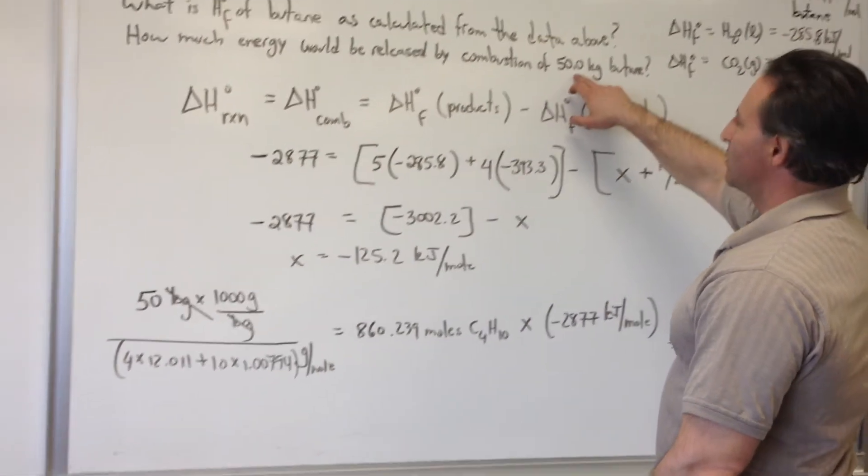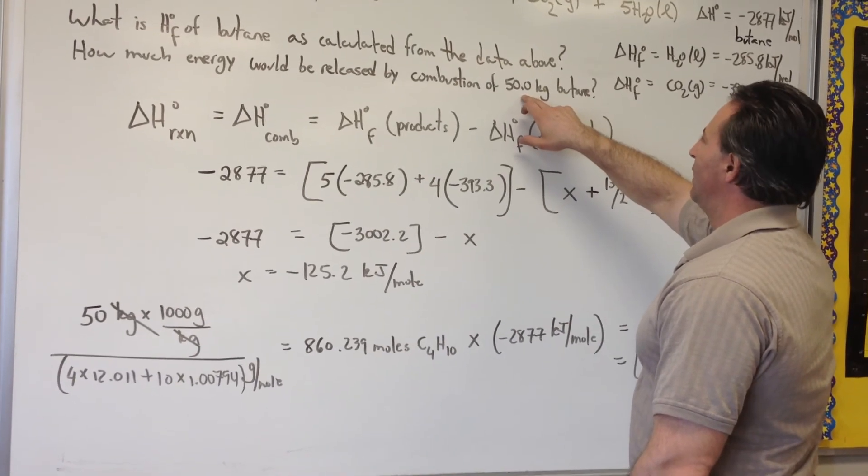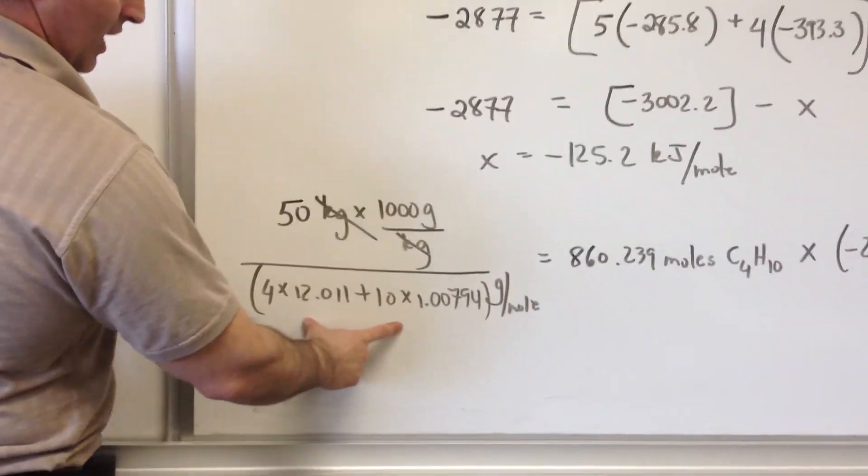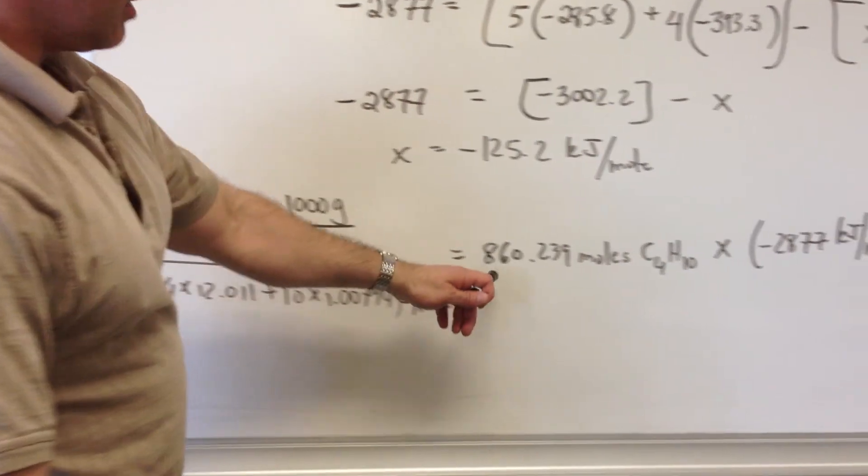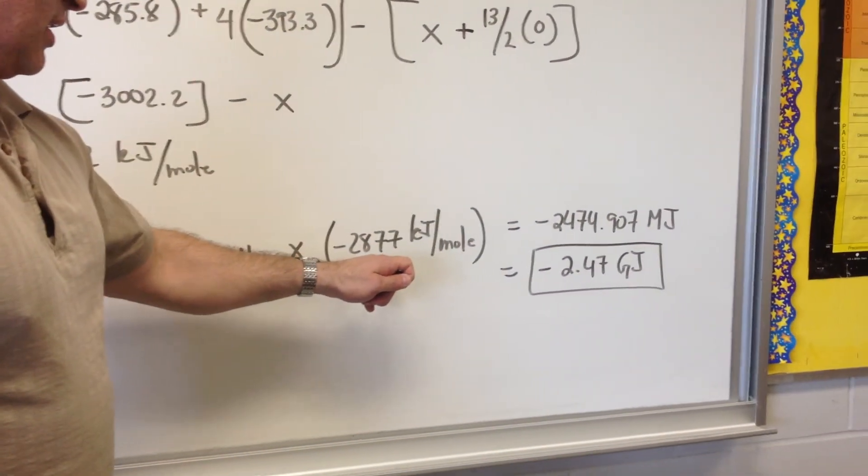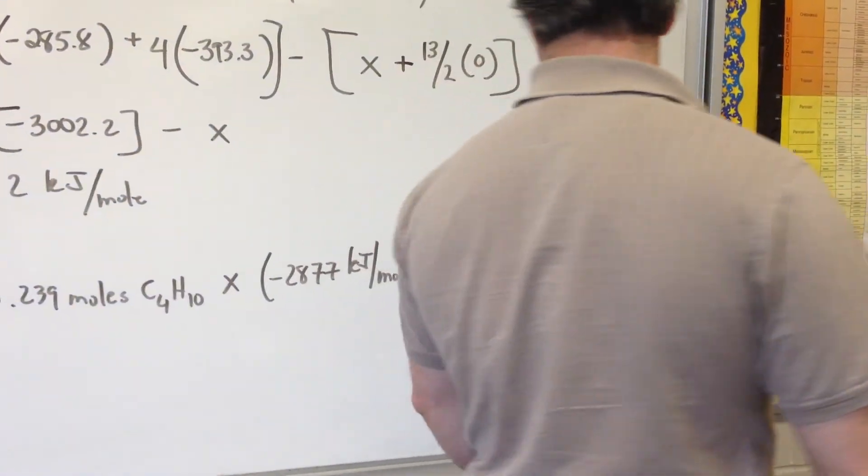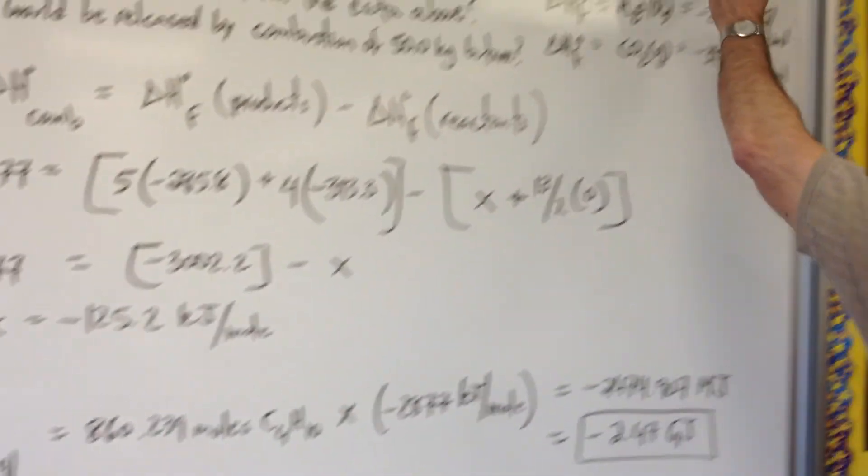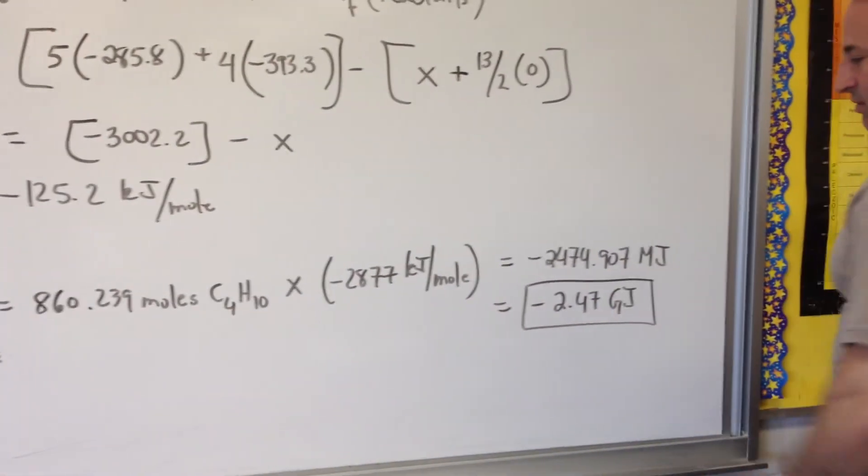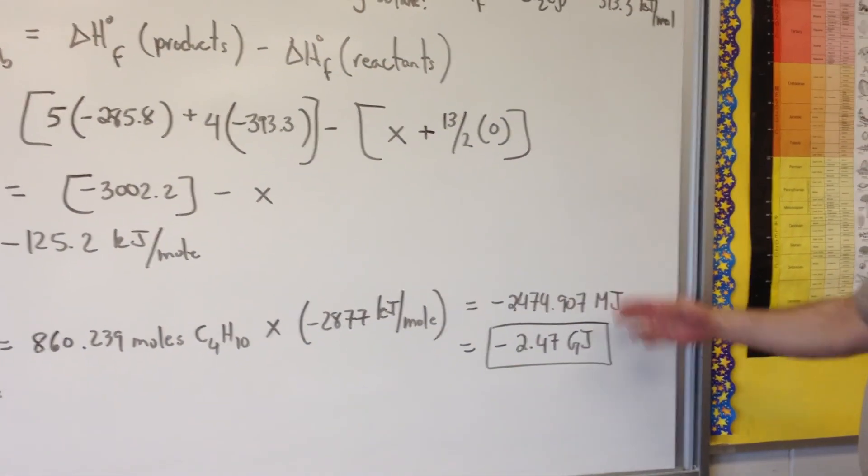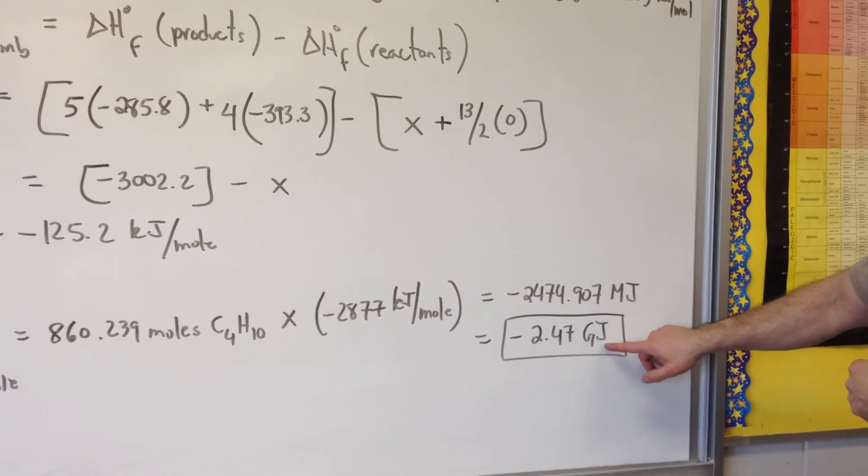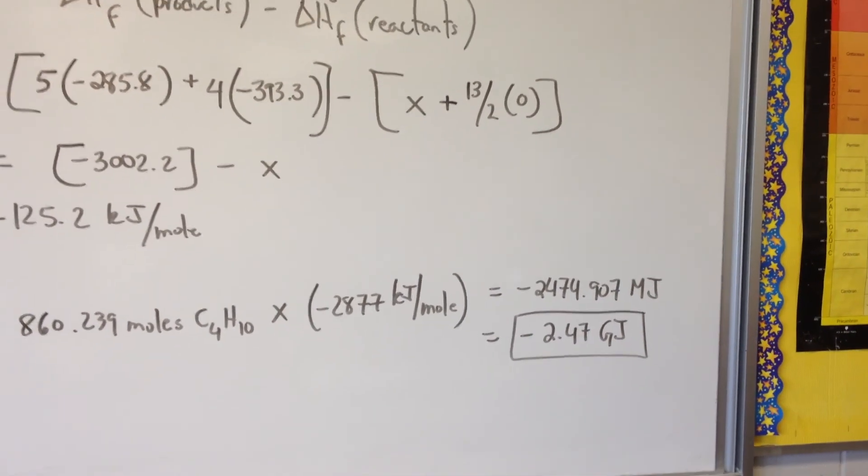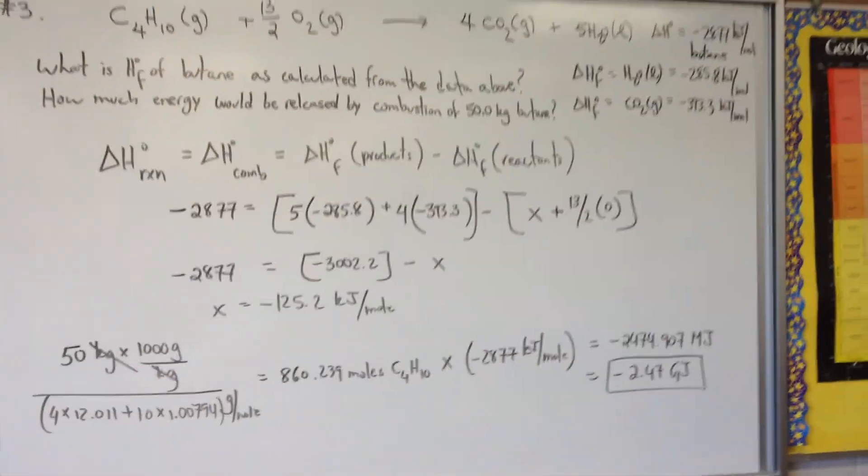Then in the second question, we're asked, if you burn 50 kilograms of butane, how much energy is released? So we convert kilograms to grams, divide by the molar mass of butane, and we find out there's 860 moles of butane. And then we multiply by the heat of combustion of butane, not the heat of formation. If you multiply by this, you'll get the wrong answer. We have to use this number. So 860 times that gives you negative 2,474 megajoules, which I then reduced into gigajoules by dividing by 1,000. Remember, there's 1,000 megajoules per gigajoule. We're only allowed three significant figures.